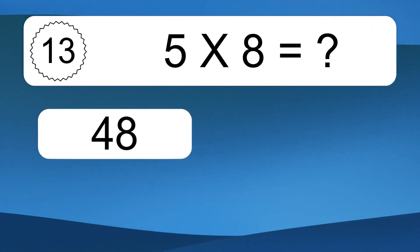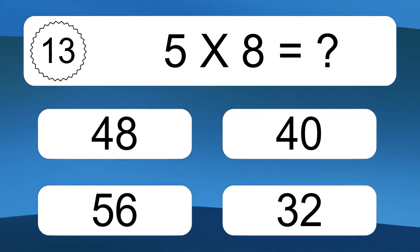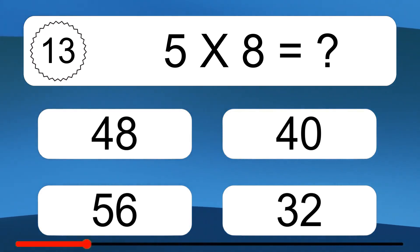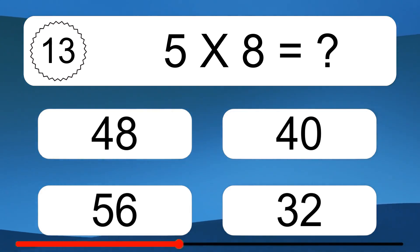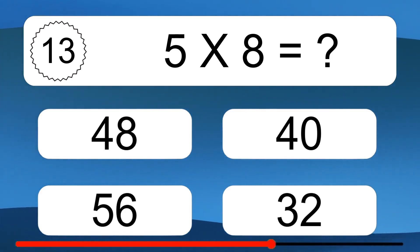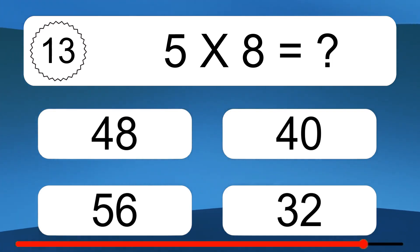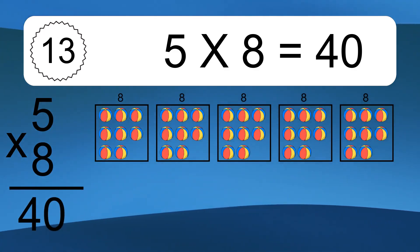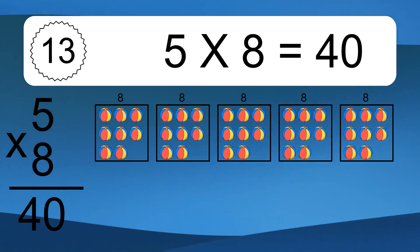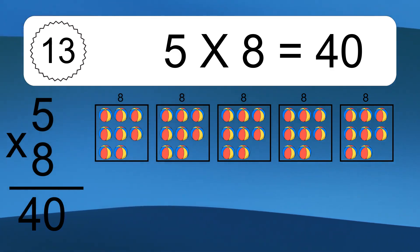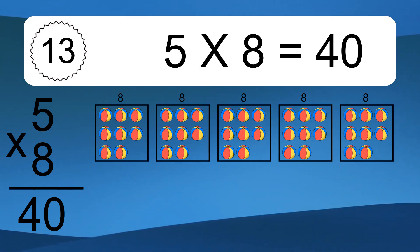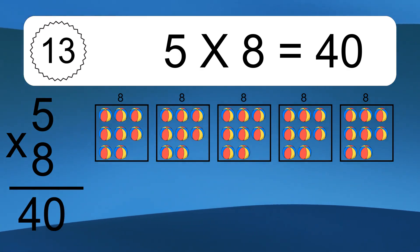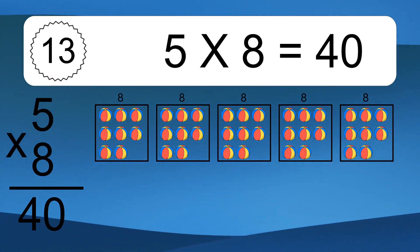5 times 8 equals what? We have 5 boxes, and each box has 8 colorful balls inside. If you count all the balls in all the boxes together, you will have 5 times 8 balls. This equals 40 balls.